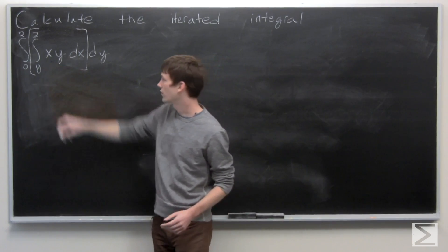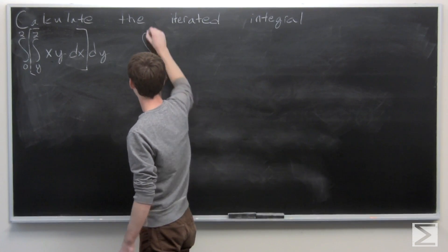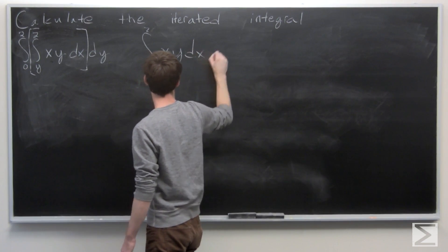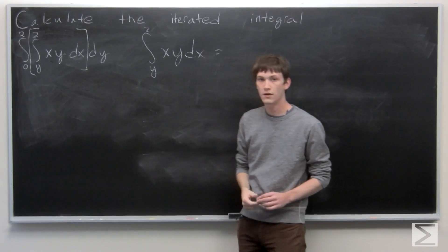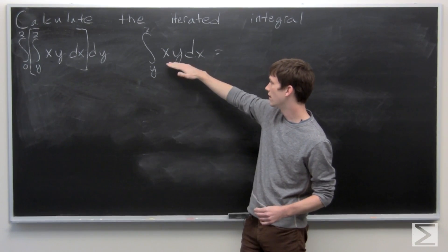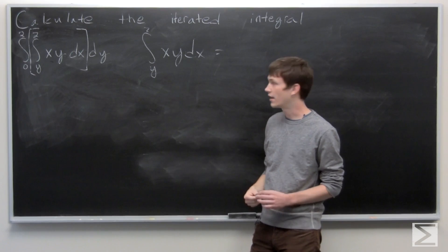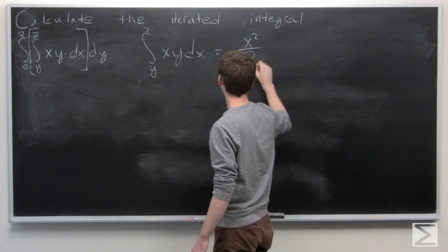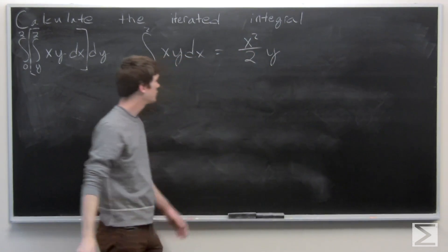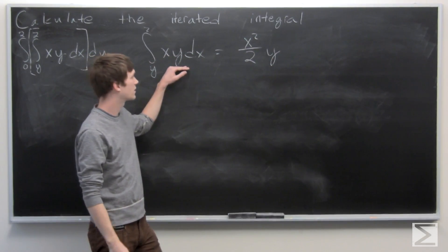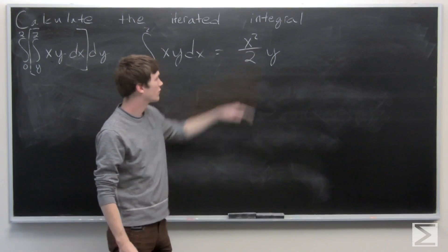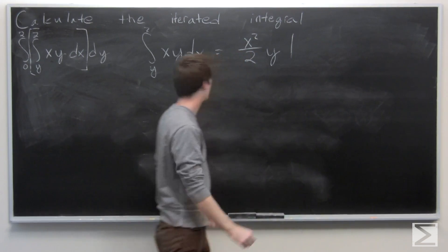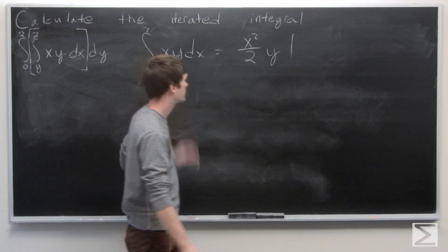So we're going to go ahead and calculate that. The y is held constant and we're integrating x, which we know to be x squared over 2, and then our y is constant. So we have x squared over 2 times y and we're evaluating it from y to 2.